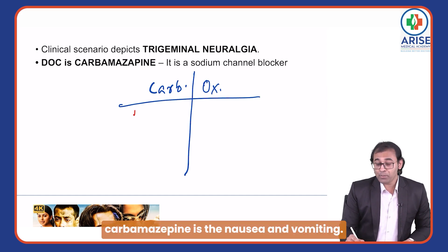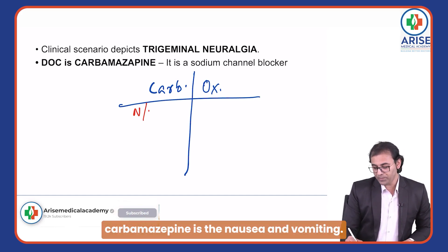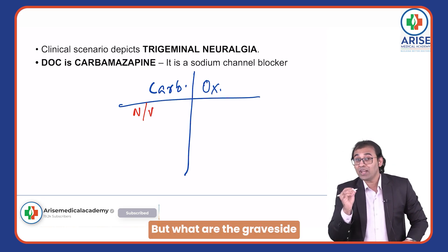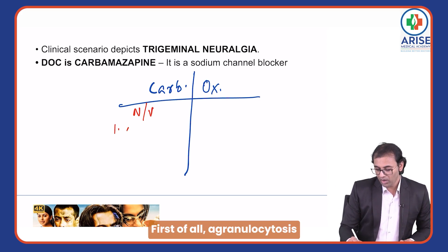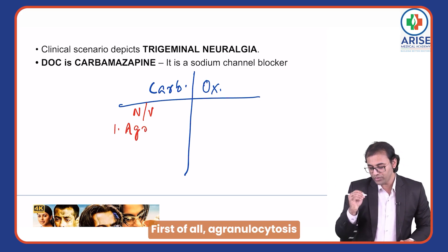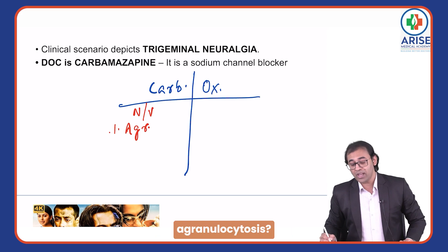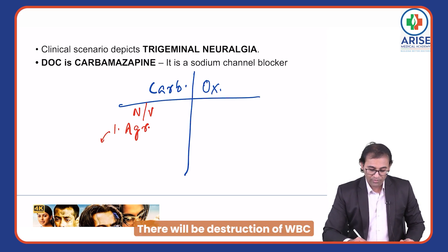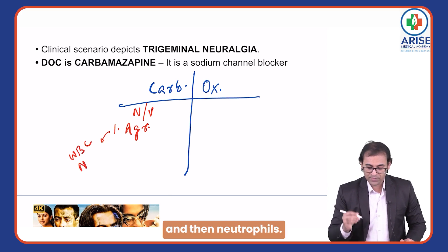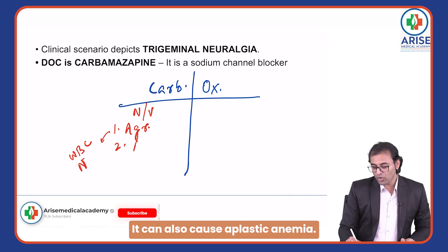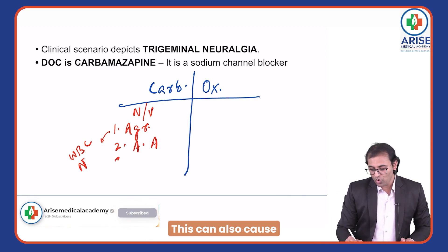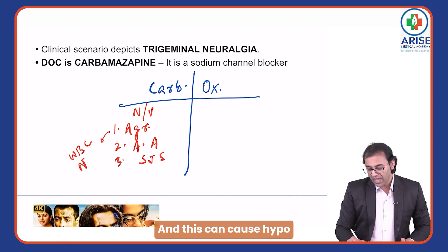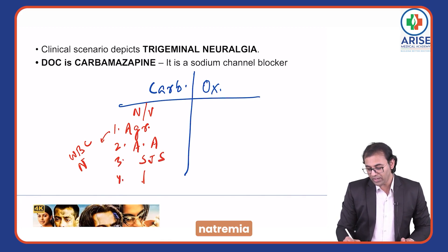The most common side effect of carbamazepine is nausea and vomiting. The grave side effects of carbamazepine include: first, agranulocytosis — meaning destruction of WBCs and neutrophils — and it can also cause aplastic anemia, Stevens-Johnson syndrome, and hyponatremia.